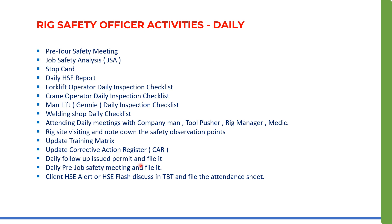Daily follow-up on issued permits and filing: the safety officer ensures that all permits issued daily are collected and filed. There are three copies of the work permit, and he files all three copies together along with the pre-job safety meeting attendance sheet. Next is the daily pre-job safety meeting — attending and filing it.